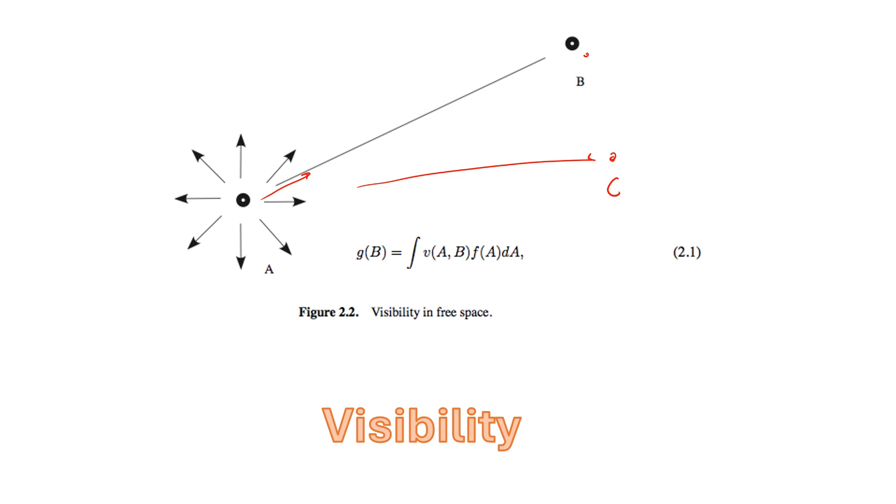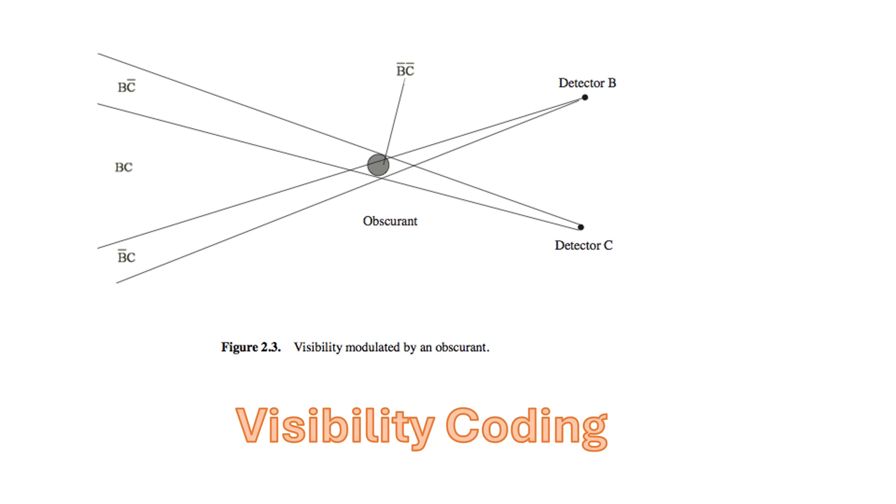In order to characterize the space, we need some diversity in our measurements, so we would put an obscurant or optical component in to modulate the field so that the measurements at point B and the measurement at point C are different. Assuming that the light from each point in space just radiates uniformly in all directions, there's a region that point B can see but point C cannot, and a region that point C can see that point B cannot, and then there's a region that's observed by both points B and C.